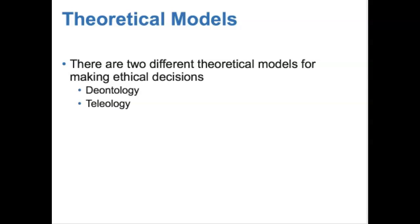When alternatives, competing demands, or conflicting choices are available, the most correct outcome with the greatest net gain for the greatest number of people is chosen. Utilitarian thinking is accepted by individuals that make decisions using this type of theoretical model, and it's relative to population groups. This makes it more applicable for people such as us who are public health practitioners, because we're interested in population health.